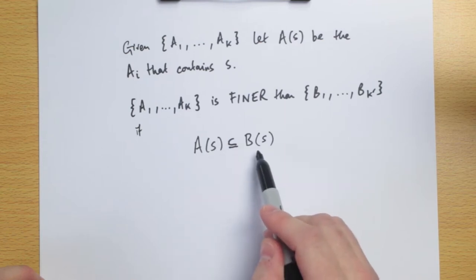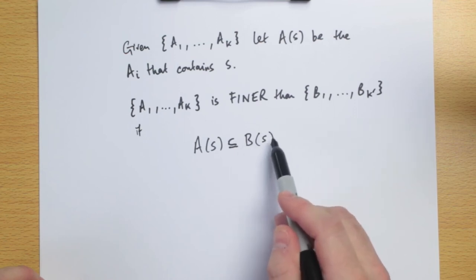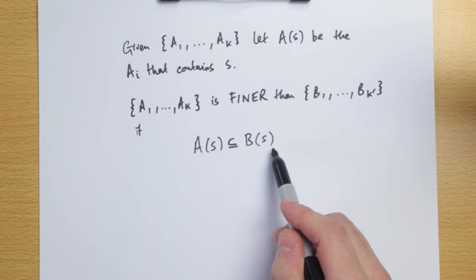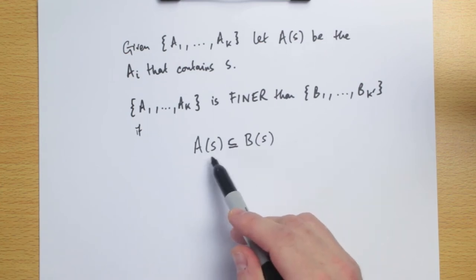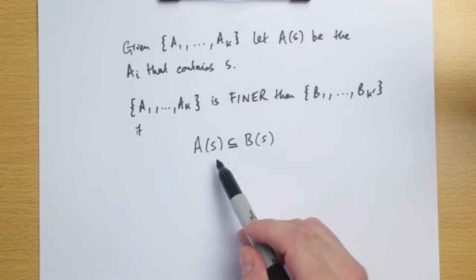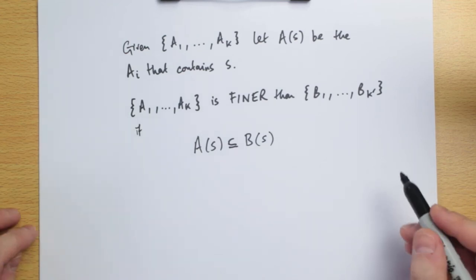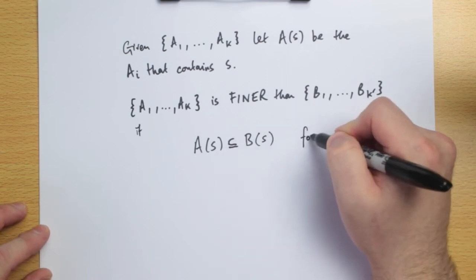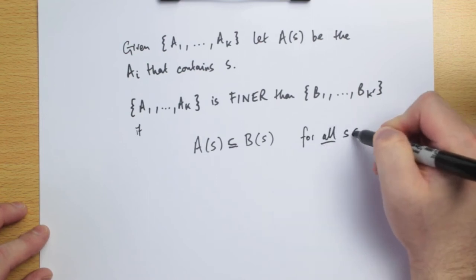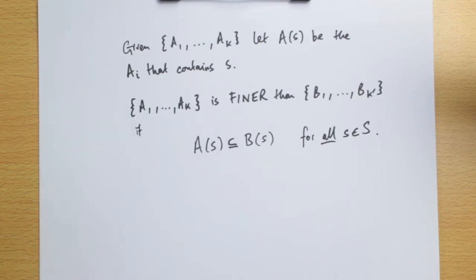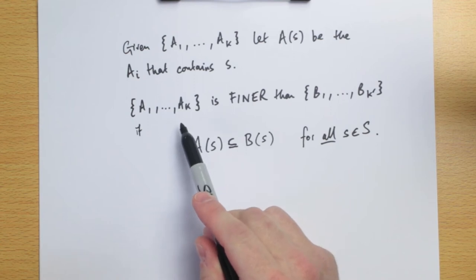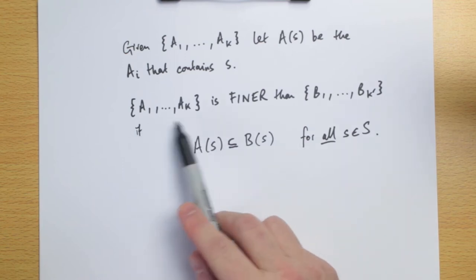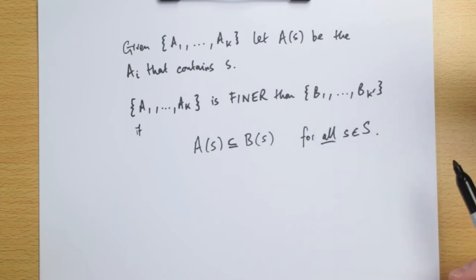What does this mean? If A(S) is smaller than B(S) — strictly contained within B(S) — then if I have information structure B and the true state is S, I'm able to rule out everything outside of B(S). Now, if I have information structure A, I'm able to do the same, but I'm also able to rule out possibly more. This is a very strict definition: it's true not just for some states but for all S in the state space, meaning A always narrows the event down more than B.